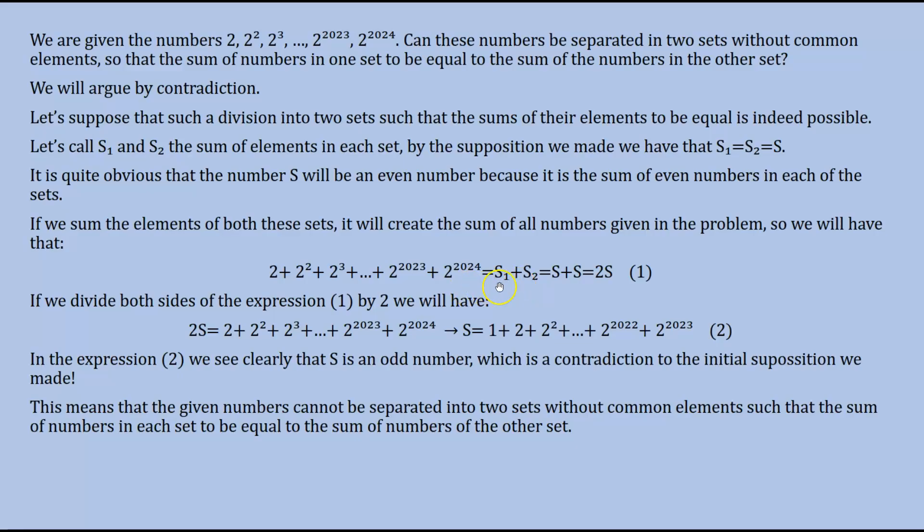But the sum of these two sets is equal to S₁ and S₂, which is the sum of the initial sets that we made the division into. But S₁ and S₂ are both equal to S, so this will be equal to S plus S, it will be equal to 2S.